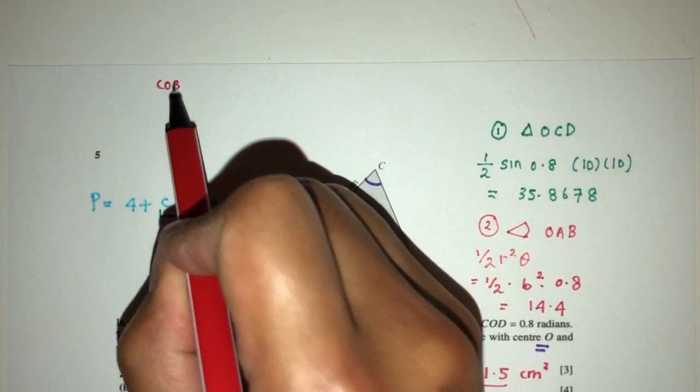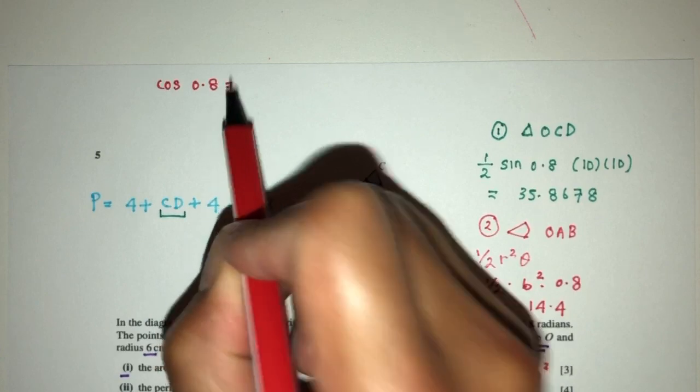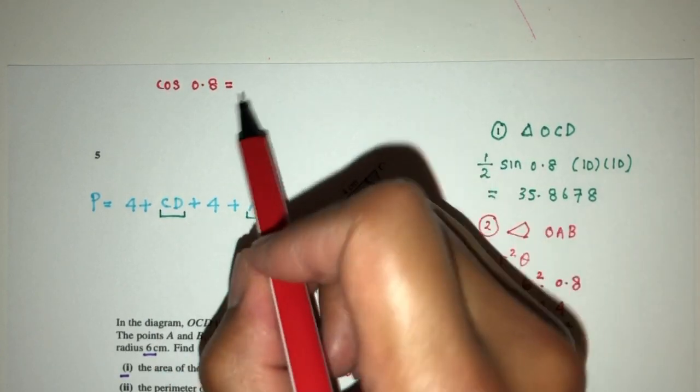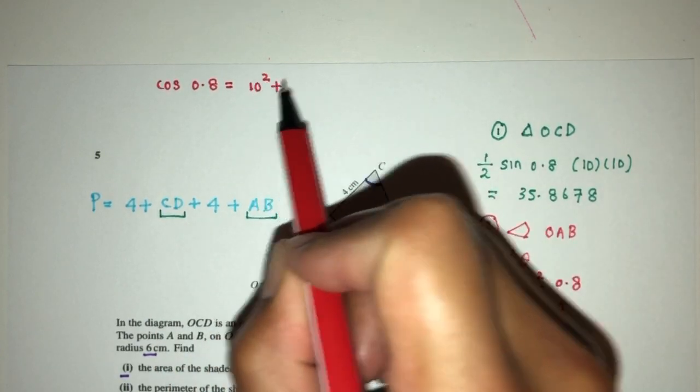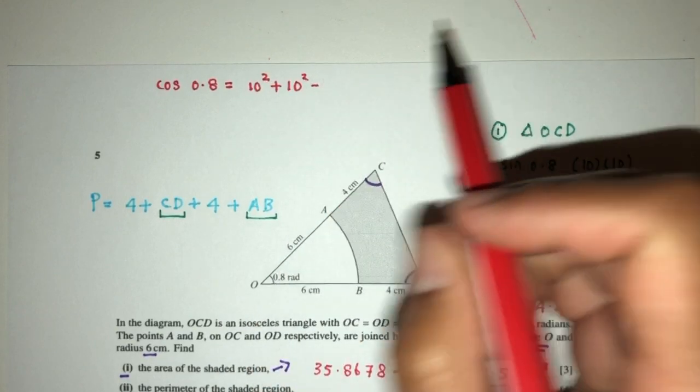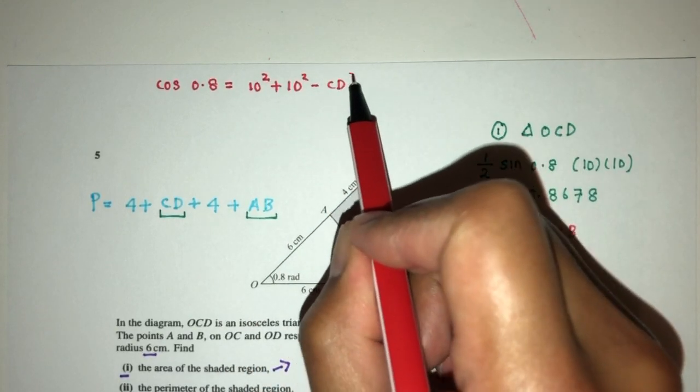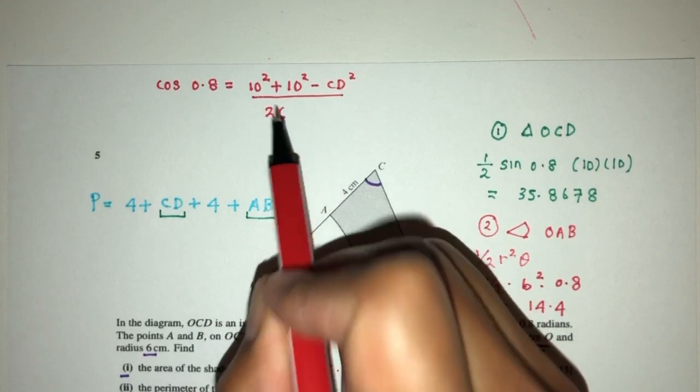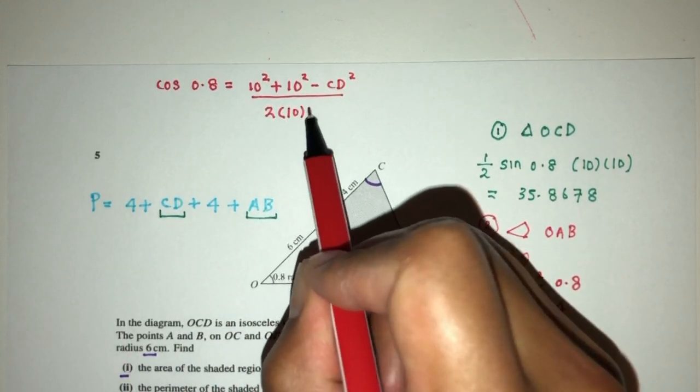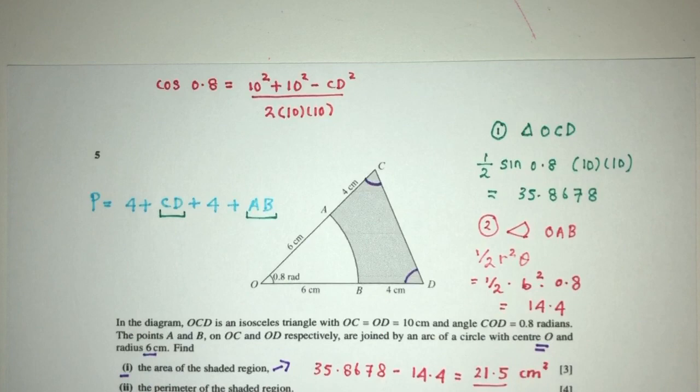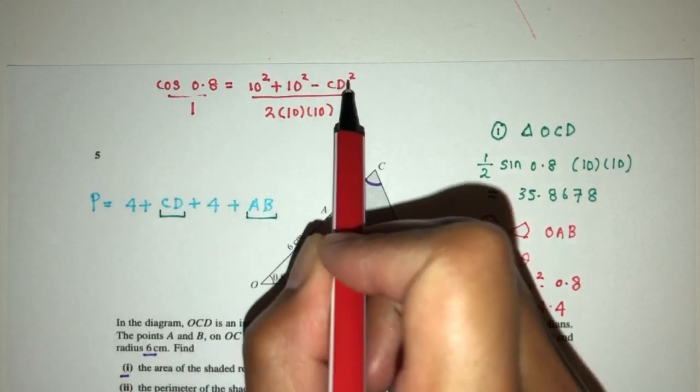So let me write this down. Cosine of the angle is going to be equal to what? 10 squared plus 10 squared minus CD squared over the value of 2 times 10 times 10. So let's simplify and solve for the value of CD.